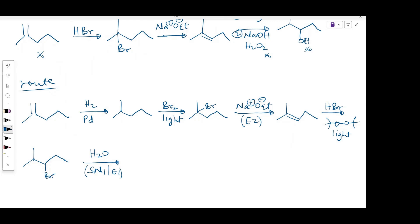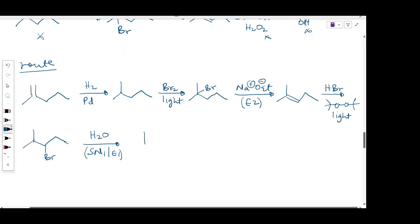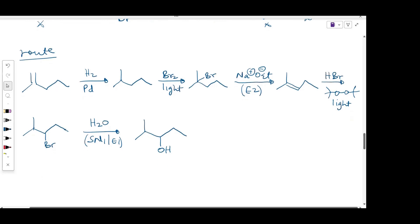So because if you're forming the SN1 product, we will also form an E1 product alongside it. So my product here is going to be this alcohol. So I will have this alcohol as well as the E1 product. So here is the product we're trying to make. But this one right here is also a product that is made alongside the SN1 product. So I'll find a way to convert that to the SN1 product.